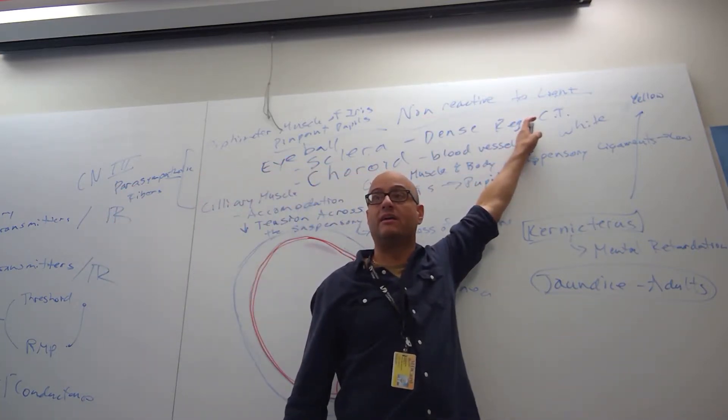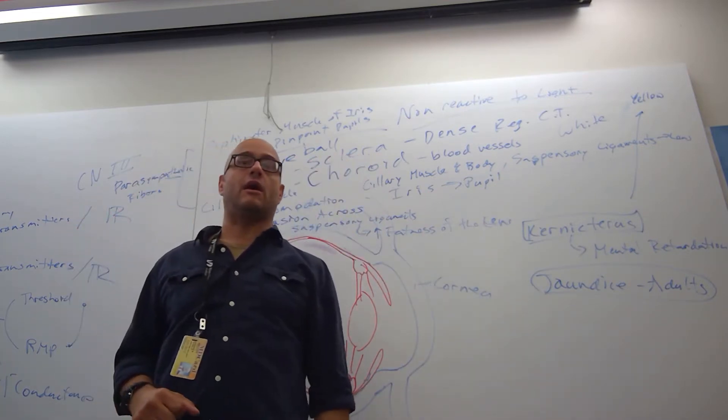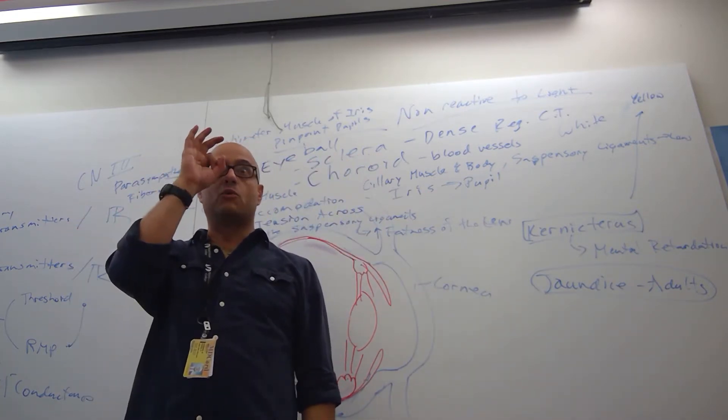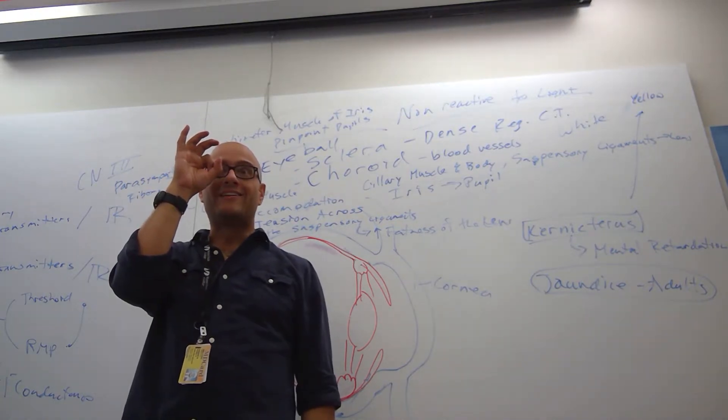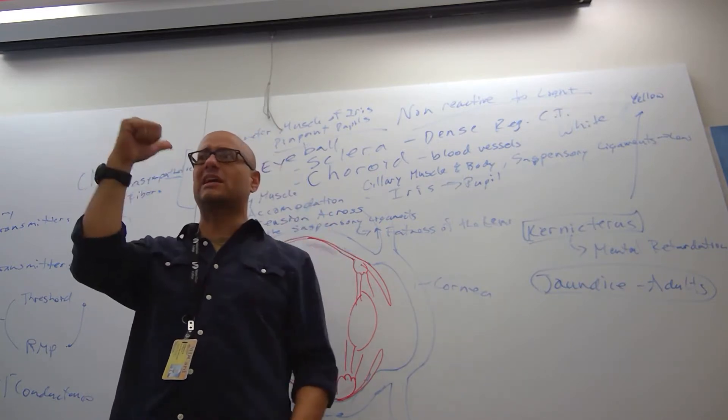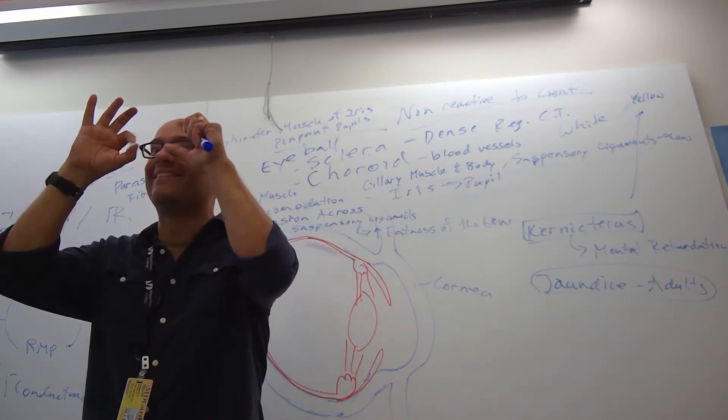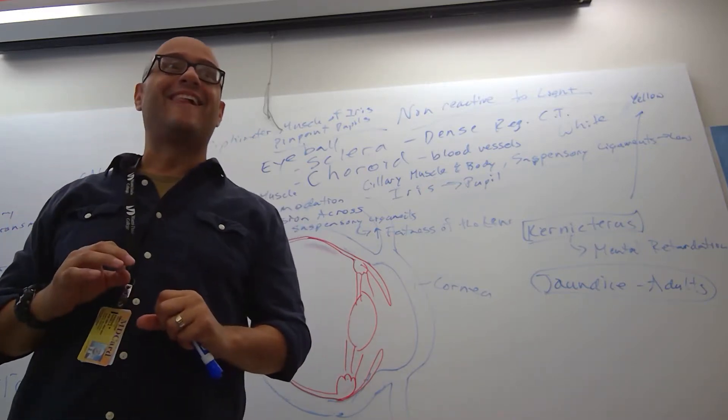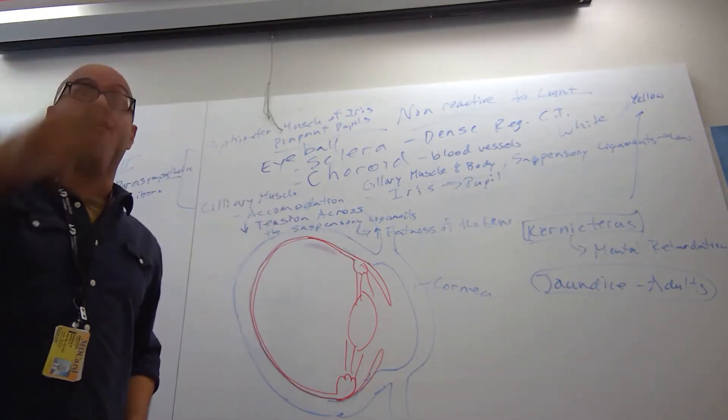So when you get a patient, you shine the light in their eye. When you shine the light in their eyes, you go, whoop. Take the light away, it comes back down. Shine it again. Shine it in this eye, look at this eye, it goes whoop. Wait a minute, I shine the light in this eye, not this eye. Ah, because they're both going to respond together. Make sense? Yeah, because they're working as one unit for us to see.